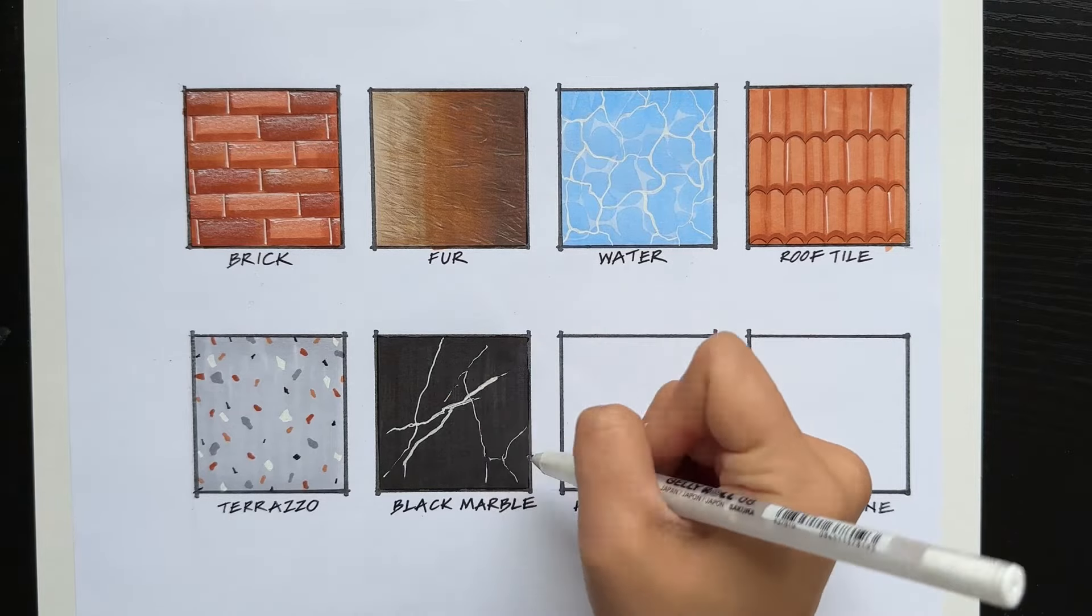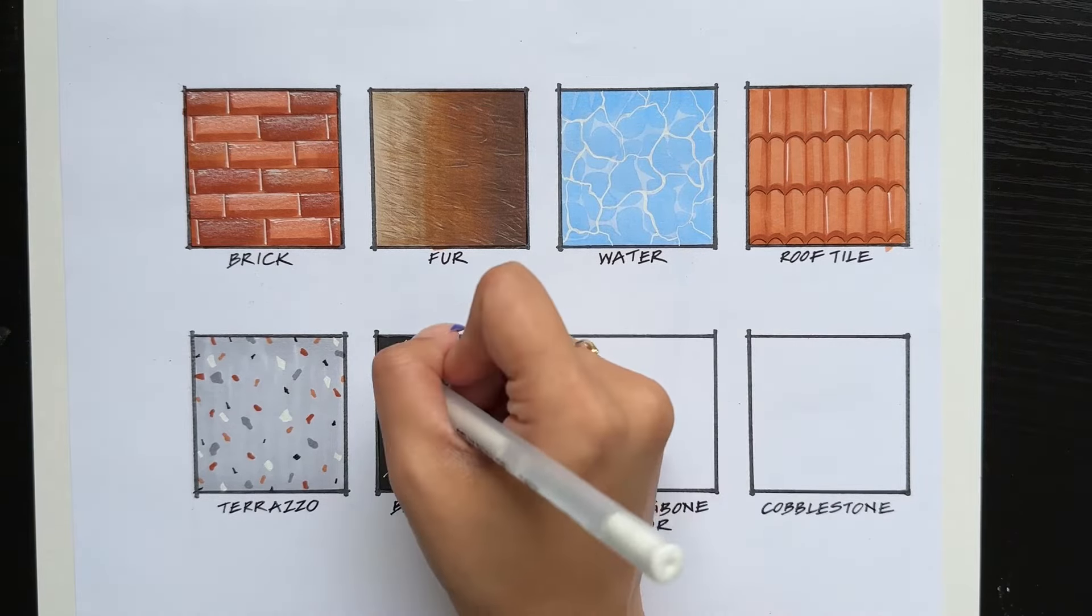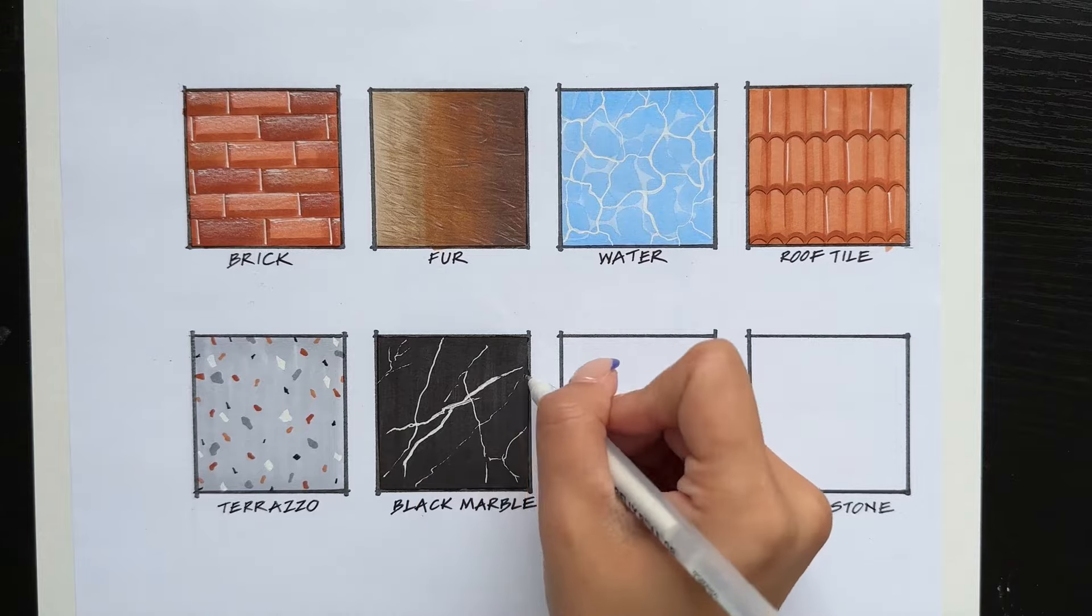For the veins, you can notice that some veins are thicker and some are thinner. So just press harder and add a few more strokes for the thicker veins.